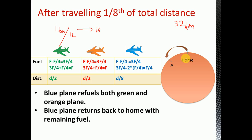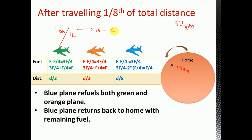Let us assume that all three planes start from the home place and travel 1/8 of the total distance to point A. It means they have travelled 32/8, that is 4 km. We know that each of these planes has a capacity to travel 16 km since they have 16 litres of fuel. So, after 1/8 of the total distance, each plane would have remaining fuel to travel 16 minus 4, that is 12 km.